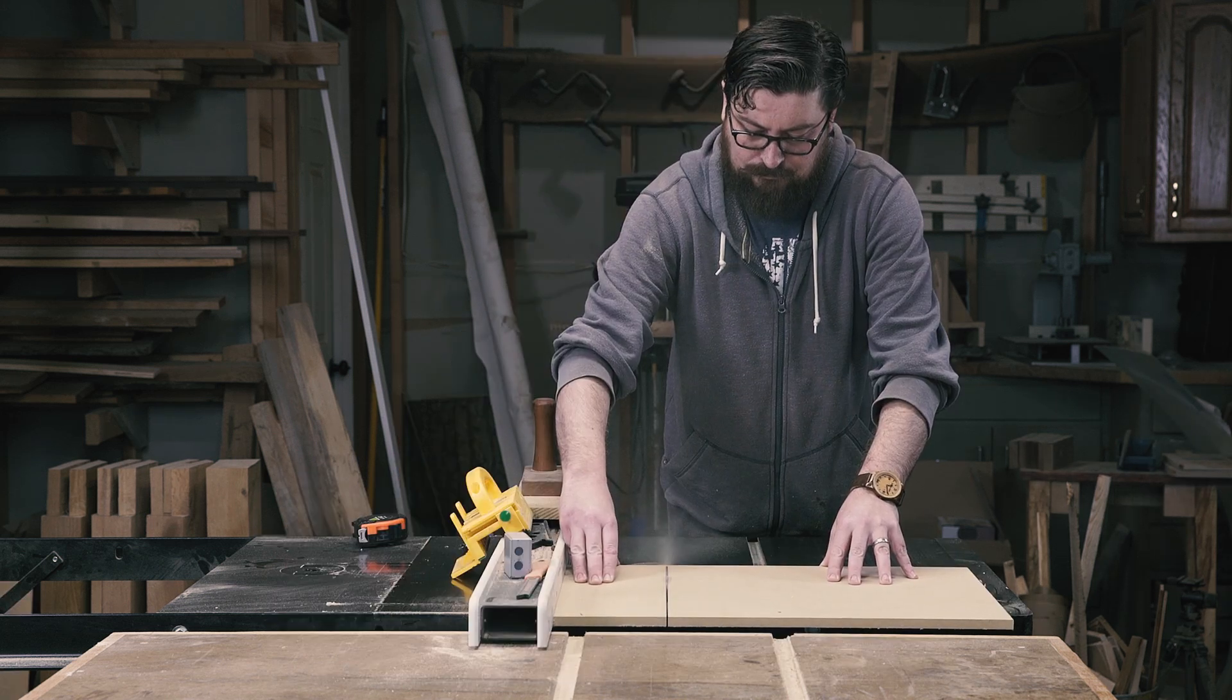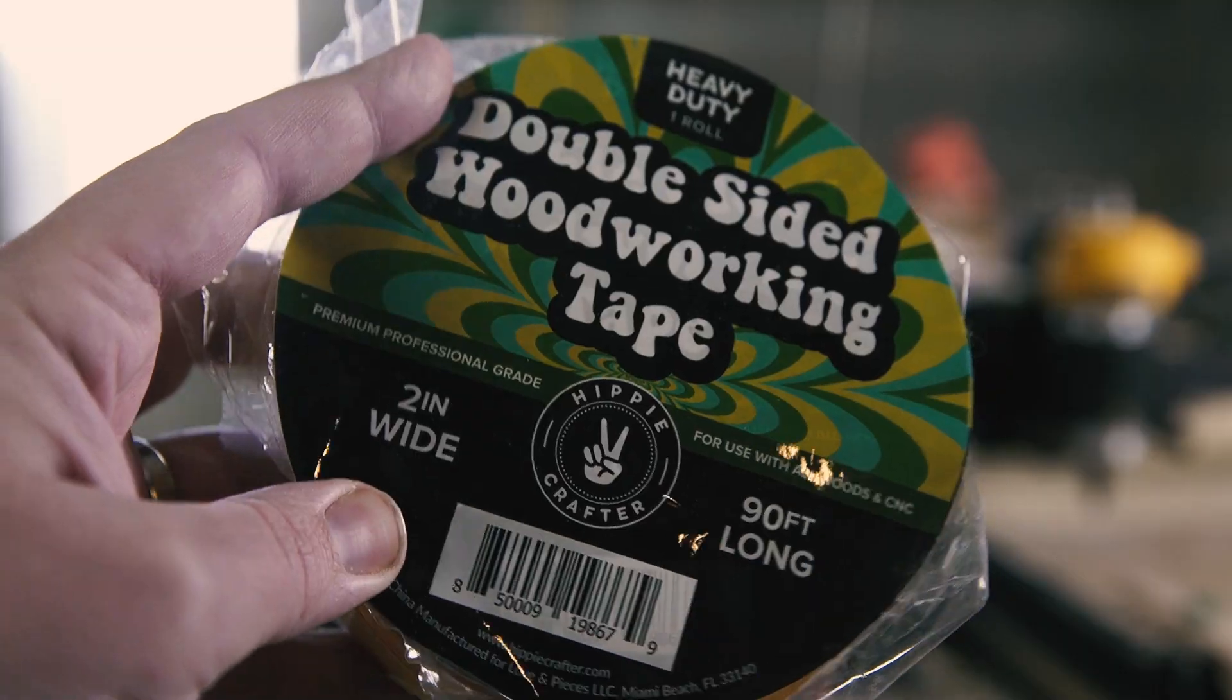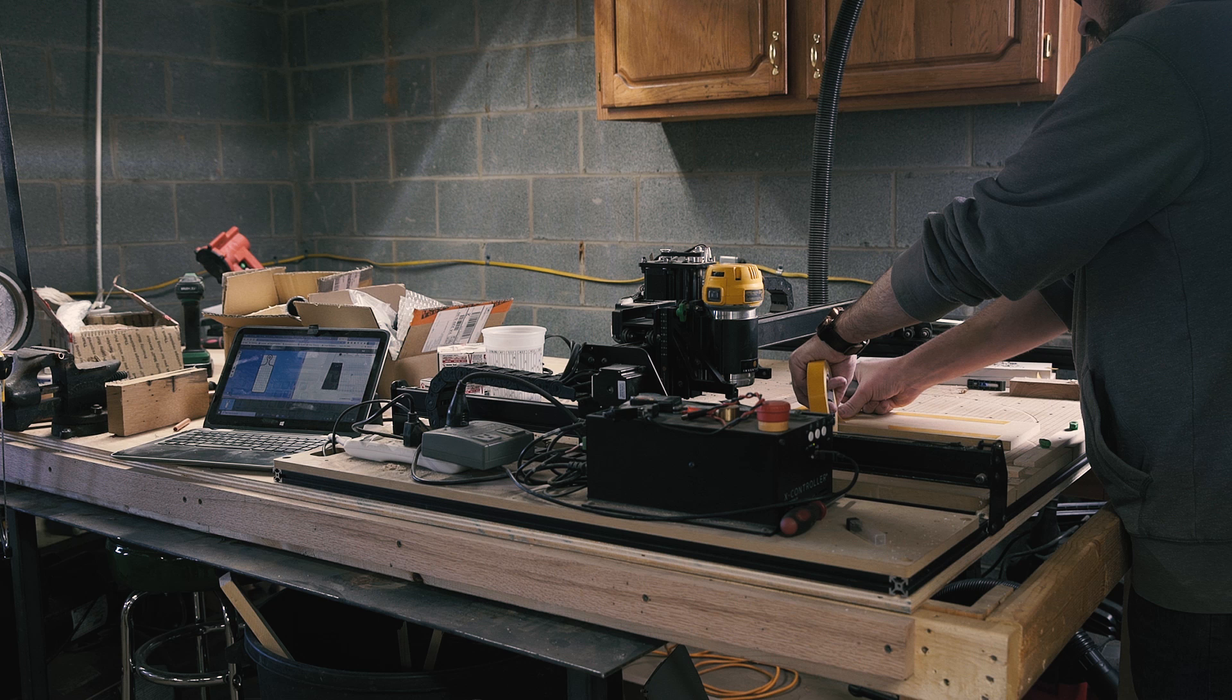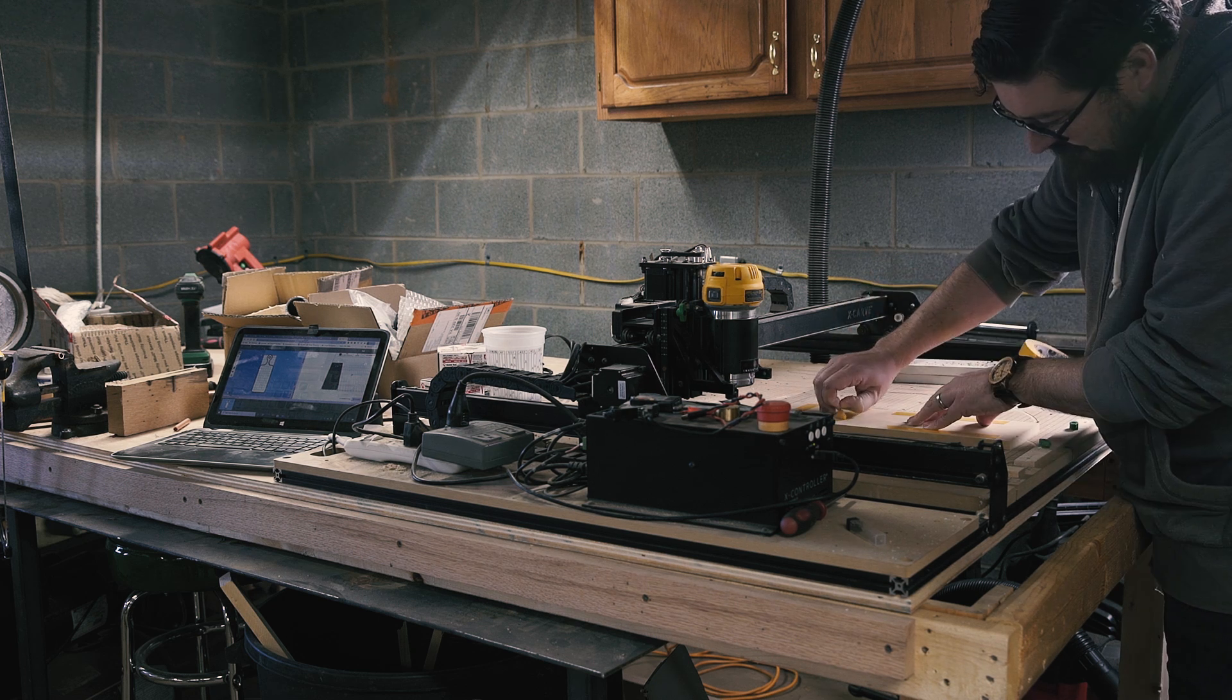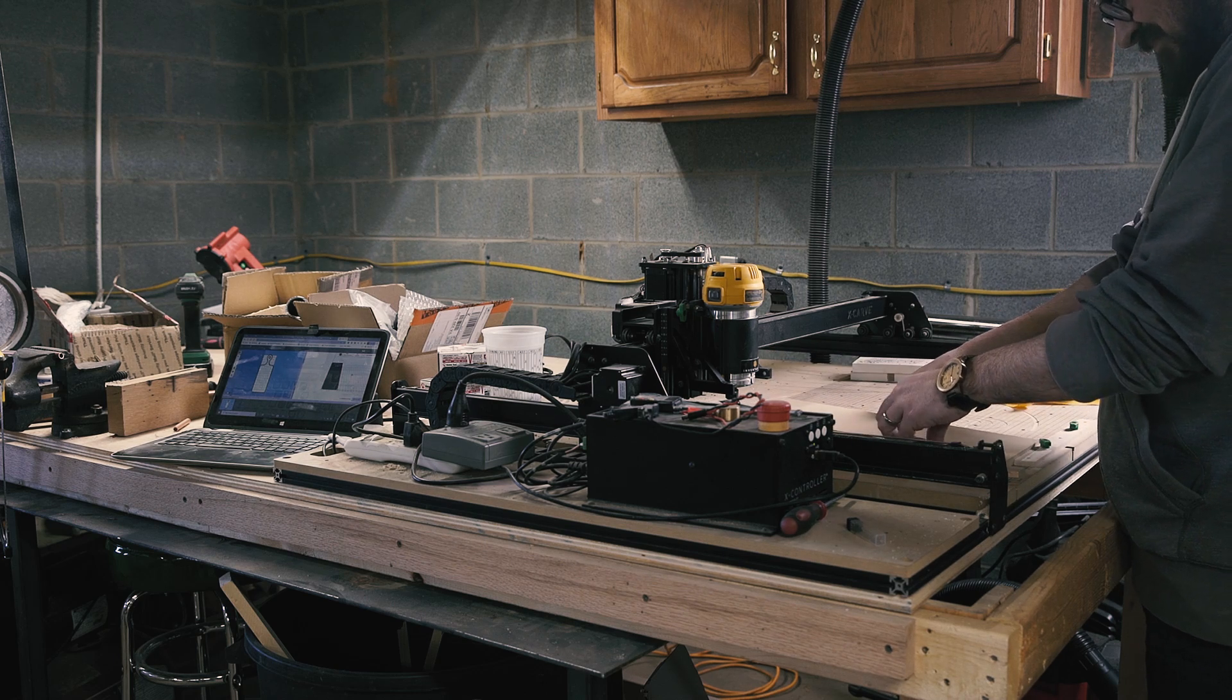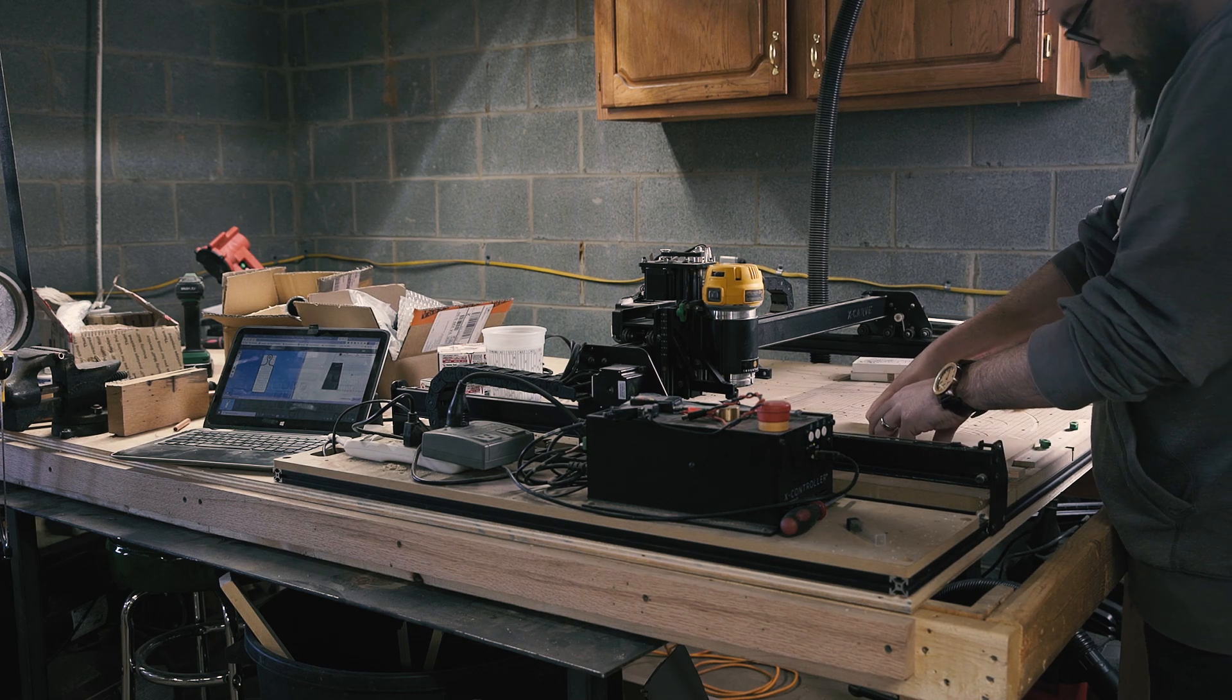To mount the MDF to the spoil board, I used this double-sided woodworking tape a company Hippie Crafter sent me to try. The advantage of this stuff over carpet tape is it's strong, but doesn't leave a residue. So strong, in fact, the amount I'm using here is way too much.